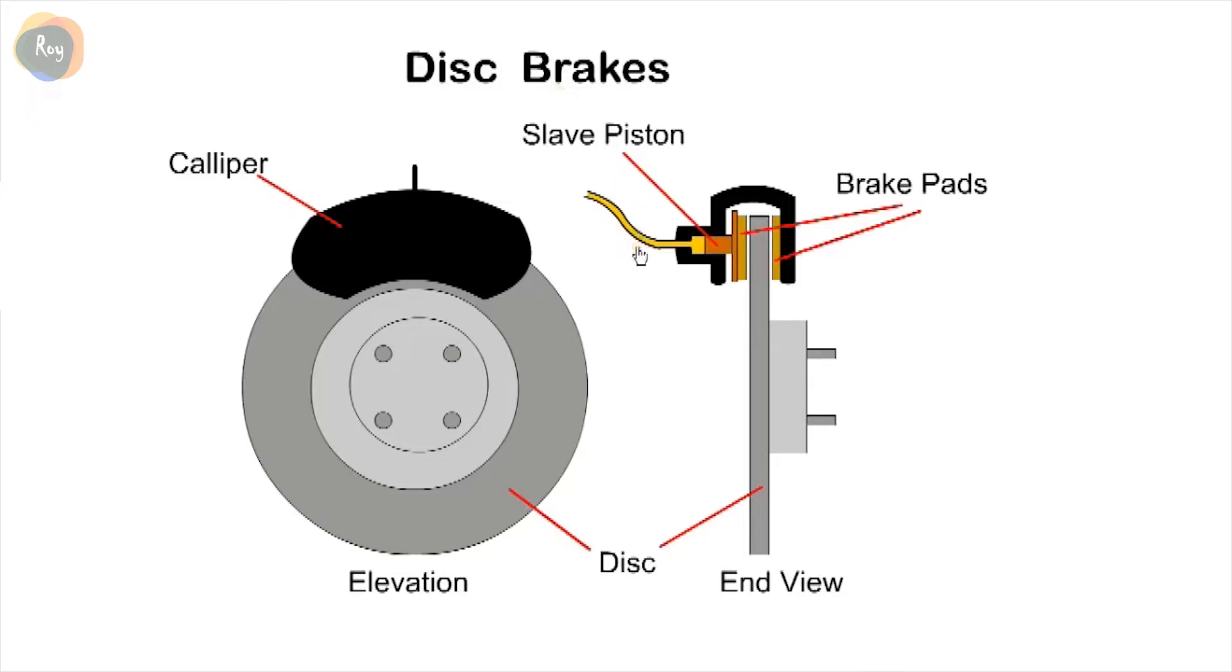We start with disc brakes. The disc or rotor is attached to the wheel and is surrounded by the brake caliper. The brake pads are located on both sides of the disc.